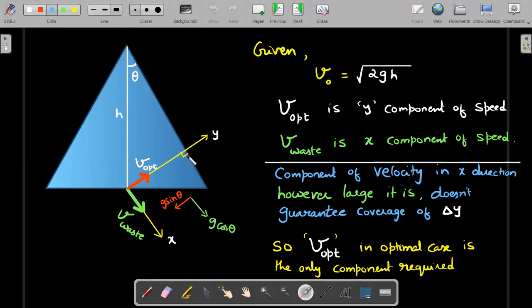However large V_waste is, it doesn't guarantee coverage. If V_opt is very small and V_waste is very large, you will still miss the slant height - it will just fall off. So V_optimum is decided by making sure V_opt is good enough to reach this position. In a minimum condition, this waste component needs to be reduced - it has to be made zero. This is the highlight of the entire concept. Understanding that the waste component needs to be made zero is the trick to solving this question.